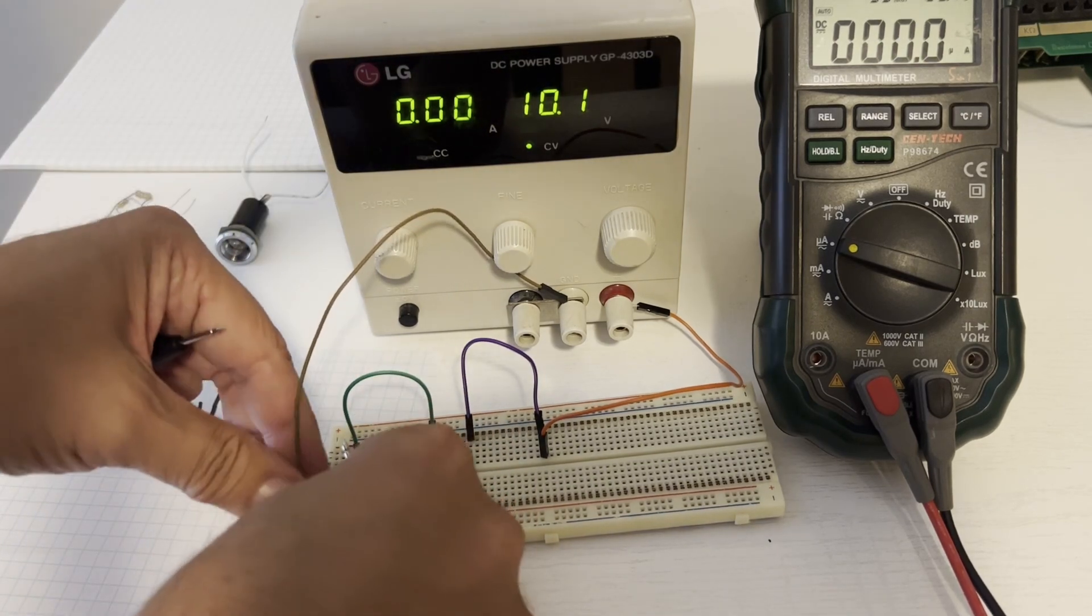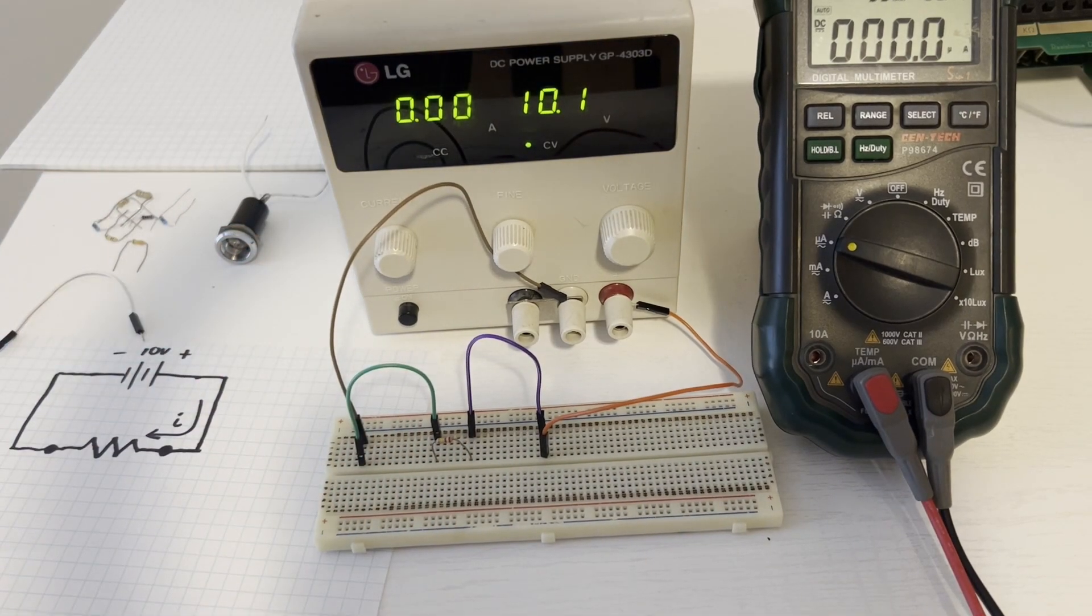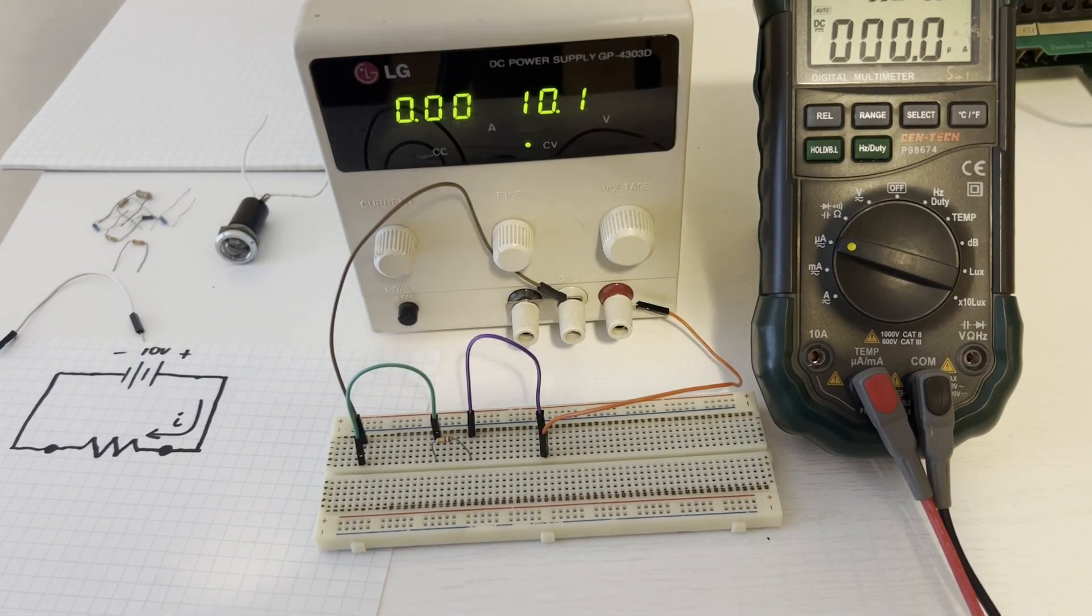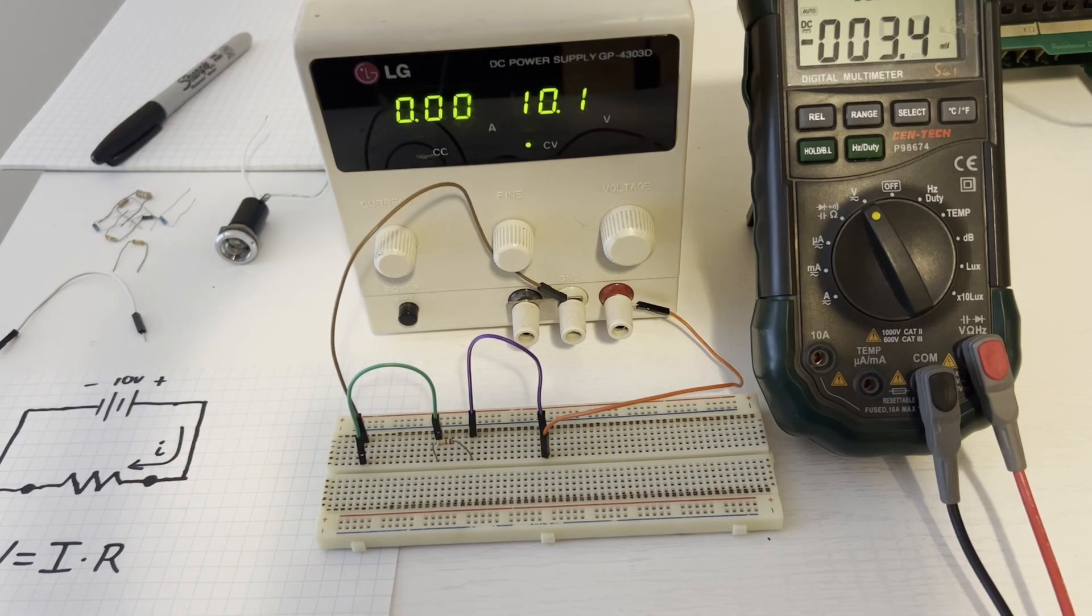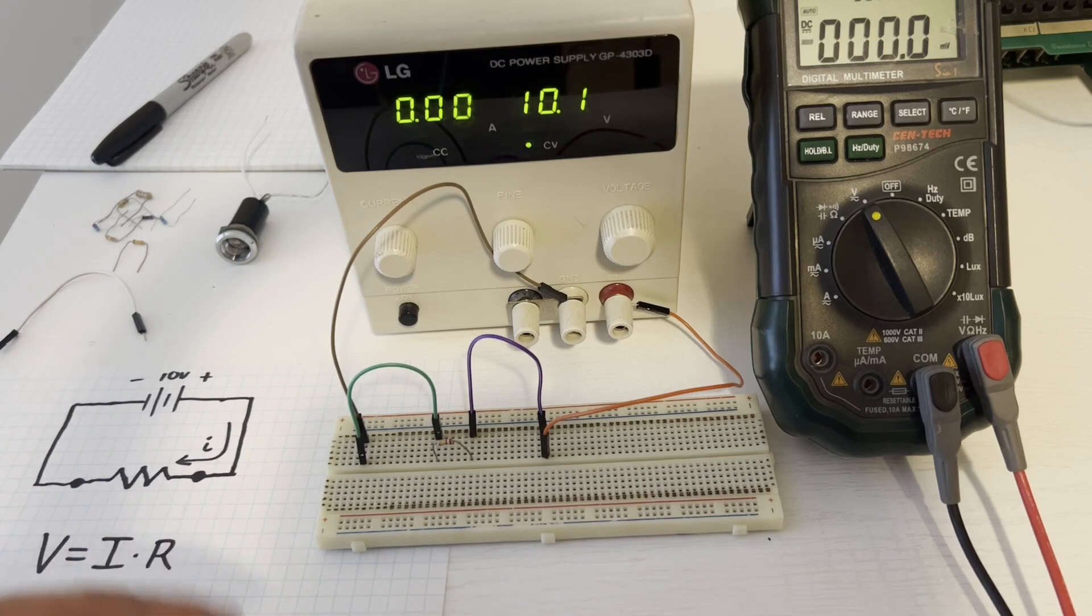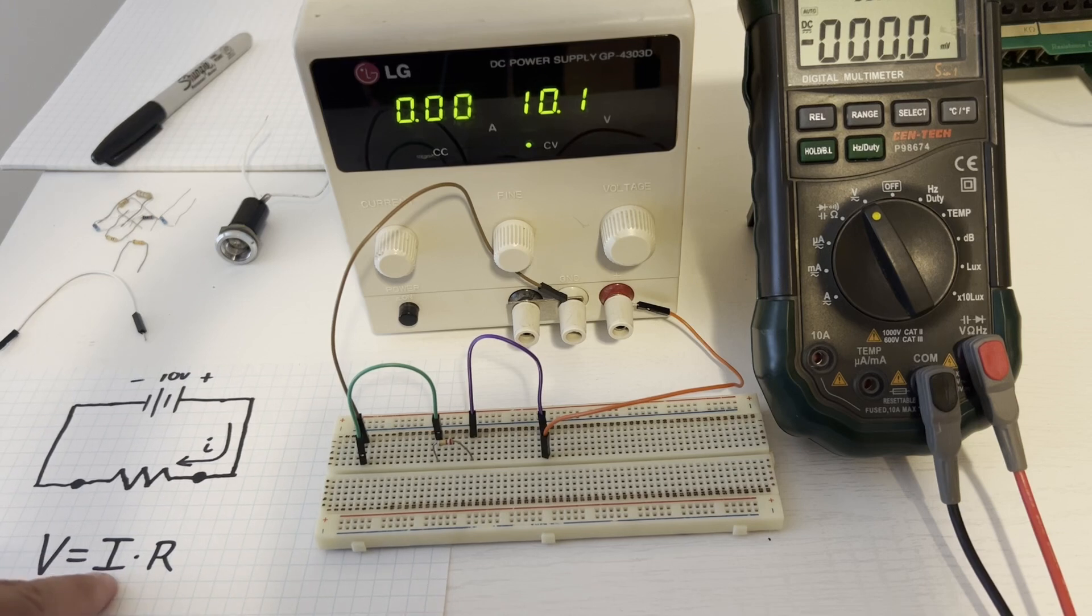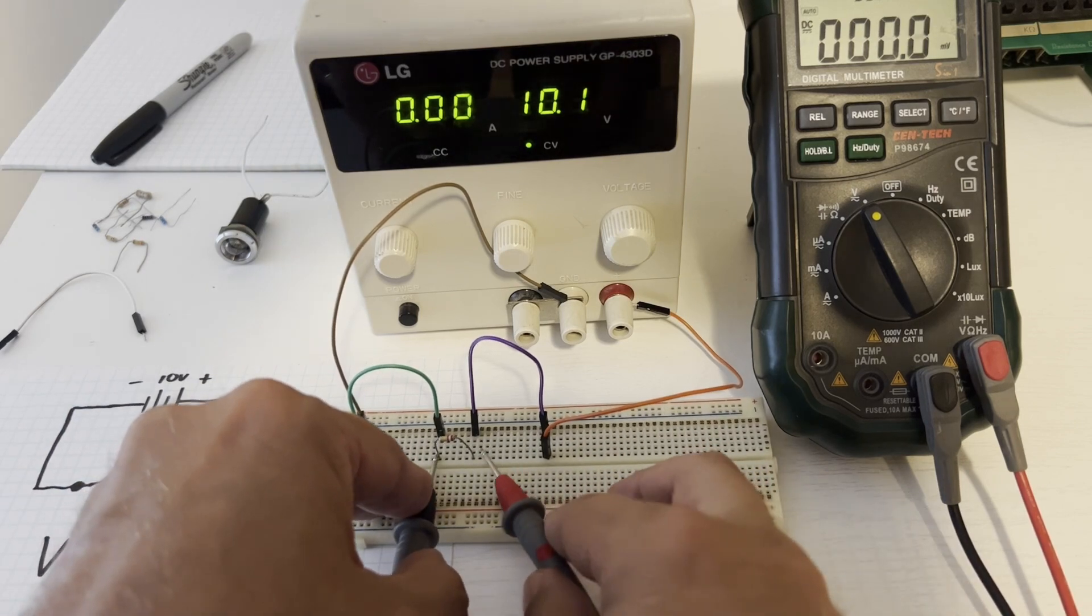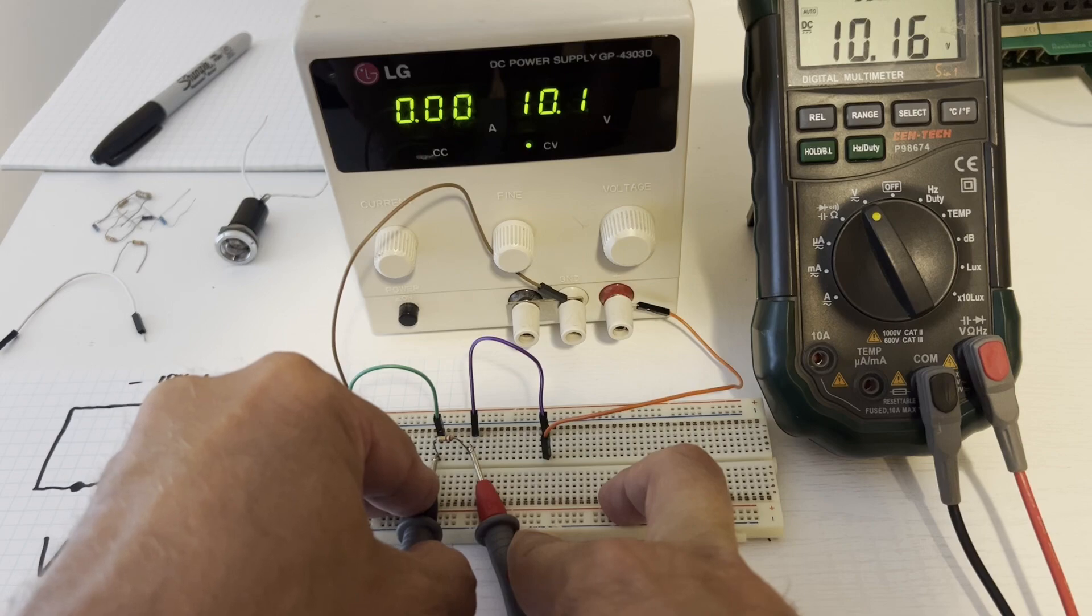Kirchhoff's current law tells us the sum of the currents flowing into the node and the sum of the currents flowing out of the node should equal zero. So for this simple circuit, the current through all these different spots should all equal the same value. Next we have Ohm's law, which is volts equals current times resistance. So the voltage across the conductor is directly proportional to the current flowing through it. And the voltage across this resistor is 10.16 volts.